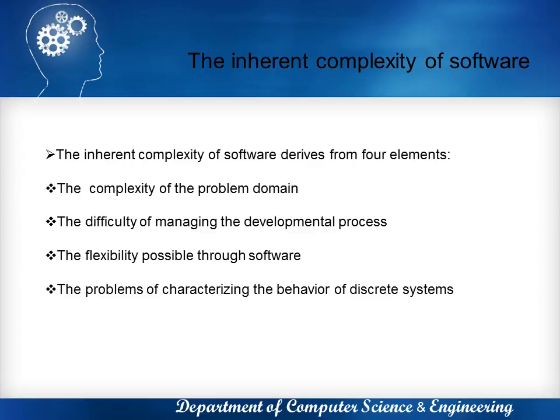Coming to the third element, the flexibility possible through software. Software offers the ultimate flexibility, so it is possible for a developer to express almost any kind of abstraction. This flexibility turns out to be an incredible property. While the construction industry has uniform building codes and standards for the quality of raw materials, few such standards exist in the software industry.